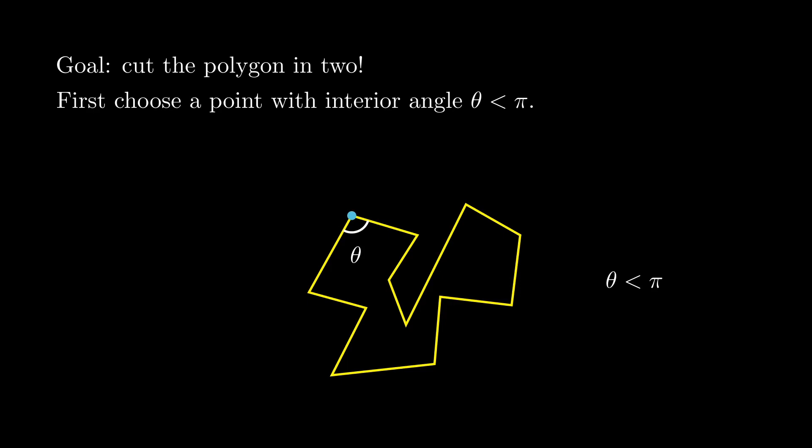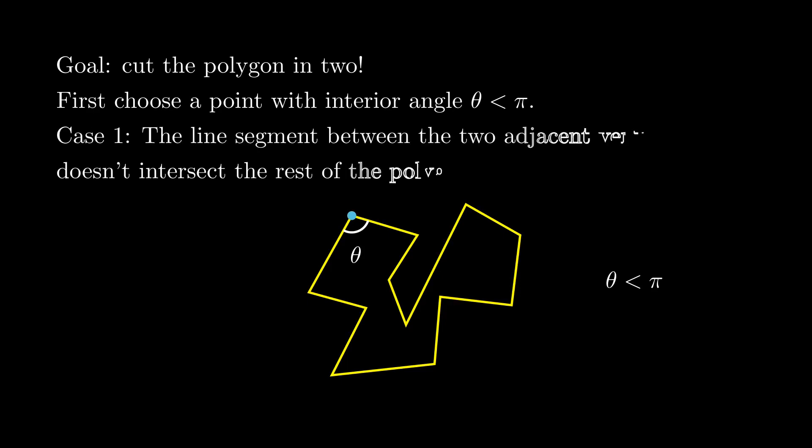The first step would be to pick a point in the polygon with interior angle strictly less than π. I leave it to you to show that it exists.